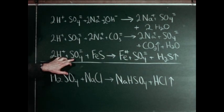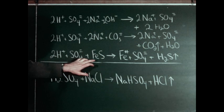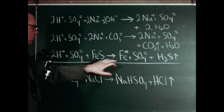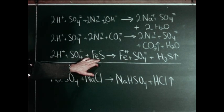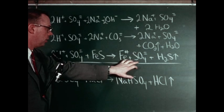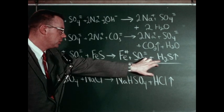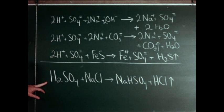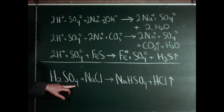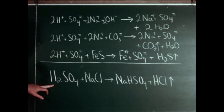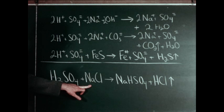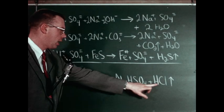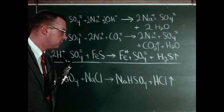In the third equation, dilute sulfuric acid reacting with ferrous sulfide, producing ferrous sulfate and hydrogen sulfide. Here we show the reaction between concentrated sulfuric acid and sodium chloride, the products being sodium hydrogen sulfate and hydrogen chloride, which was evolved.